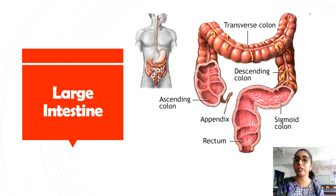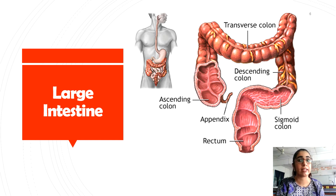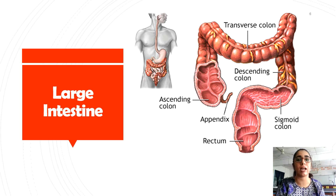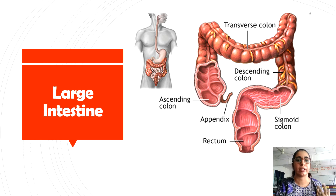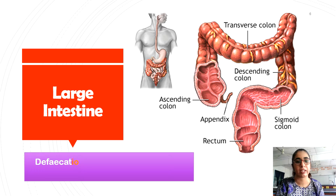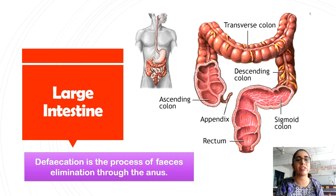The main function of the large intestine is to absorb water and solidify the undigested food into feces. It also helps to absorb vitamins which are produced by bacteria — non-harmful bacteria that can be found in the large intestine, which produce vitamins that you will learn later in this video. The large intestine also stores feces before defecation. Defecation is the process of feces elimination through the anus.